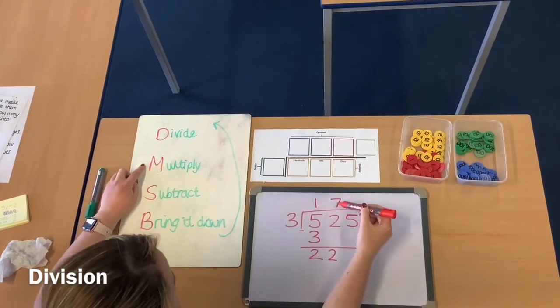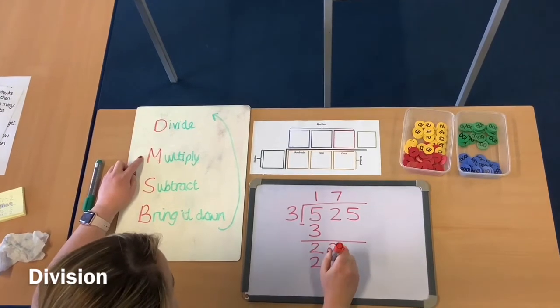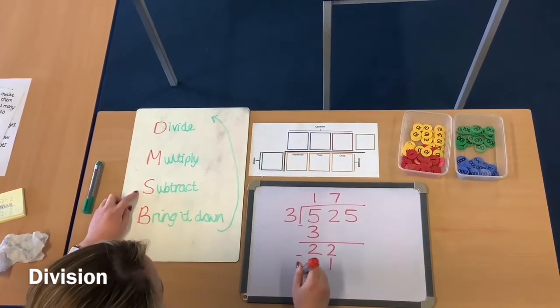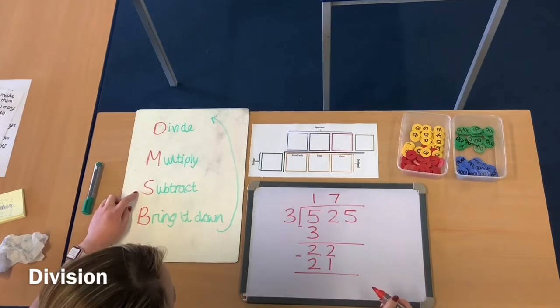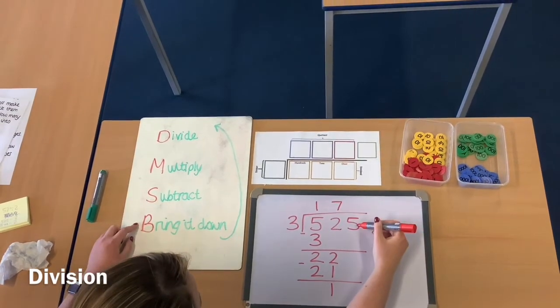Then back to step 2, multiply. So then I'm going to do 7 times 3, which is 21. Next step, subtract. 22 take away 21 is 1. And then final step, bring it down.